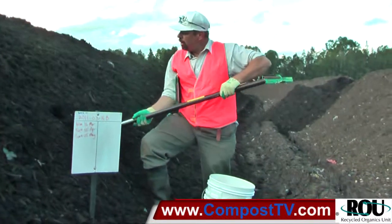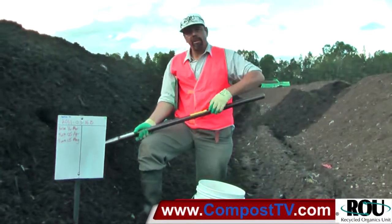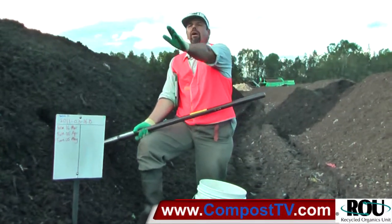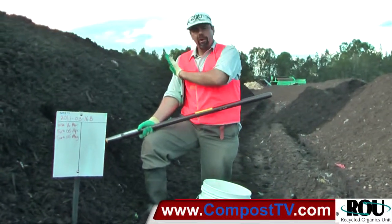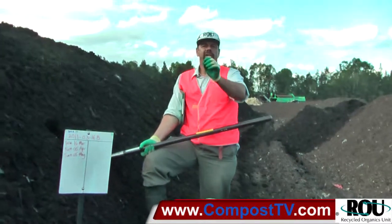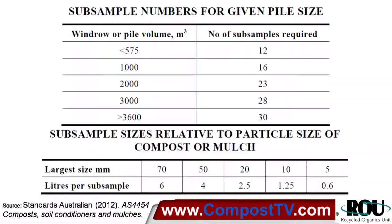So for a windrow of this volume — 600-odd cubic metres — it's a minimum of 13 samples. If you have a look on the slide, you'll see there's a range of different minimum sample numbers that relate to different volumes.